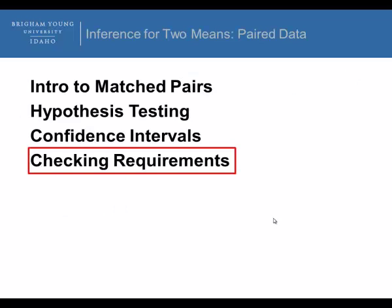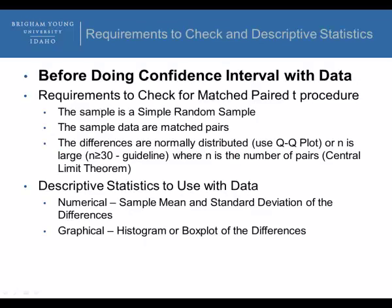Now, lastly, let's talk about checking requirements. Before doing a confidence interval or a hypothesis test for matched paired t, or a paired sample t test, we have to assume a simple random sample. Sample data are matched pairs. But given some data, if we give you data that's matched paired or paired samples, then we have to find and see if the differences are normally distributed. We have to use a Q-Q plot. Or, if n is large, if n is greater than 30 or equal to 30, that's a guideline, where n is the number of pairs, and so we apply the central limit theorem.